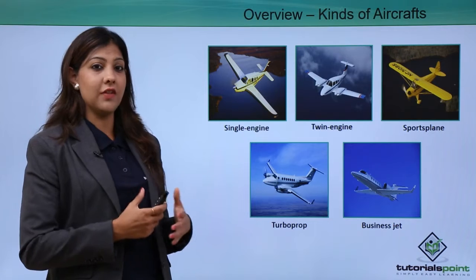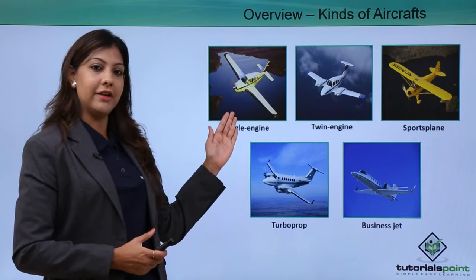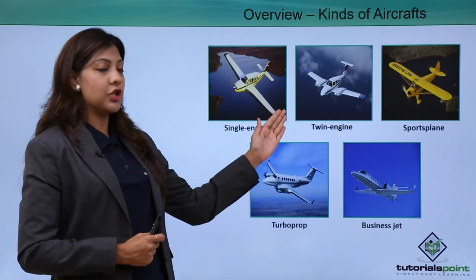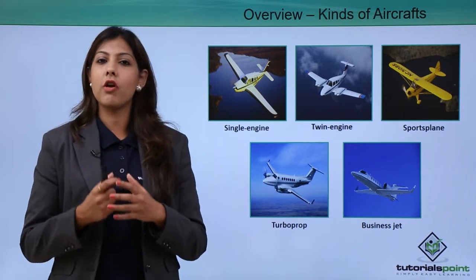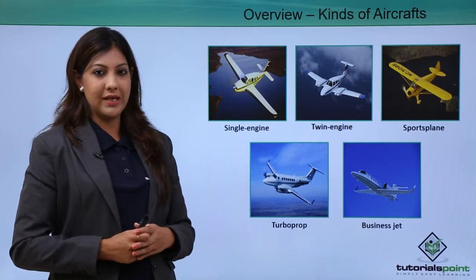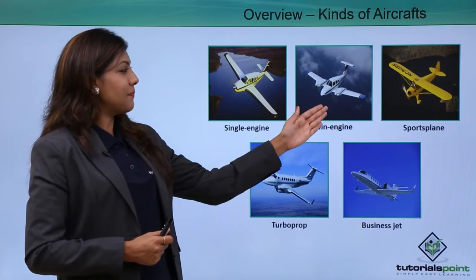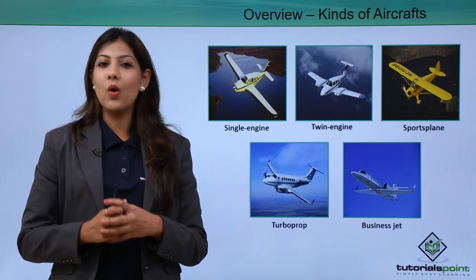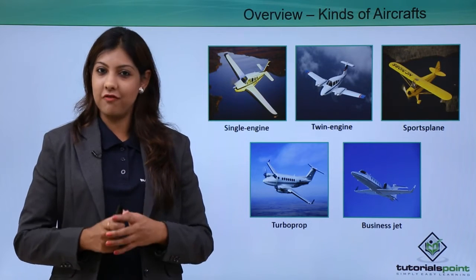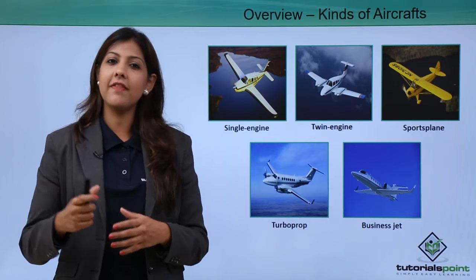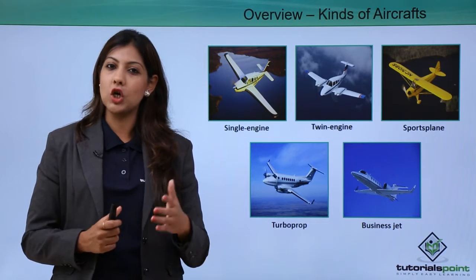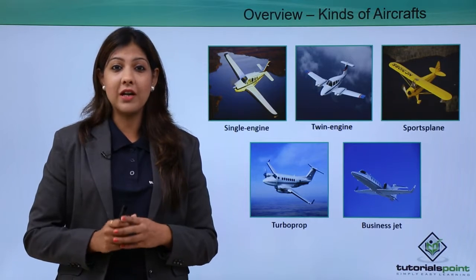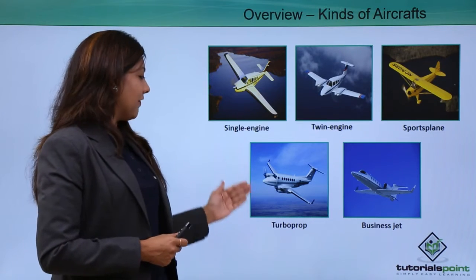Here in the images you can see a single engine aircraft, which has just one engine, and a twin engine aircraft, which has two engines. A sports plane, which looks really nice and funky, is for fun only. Sports planes do not fly very high and do not go very long distances — they are for very short distances and fly very low.